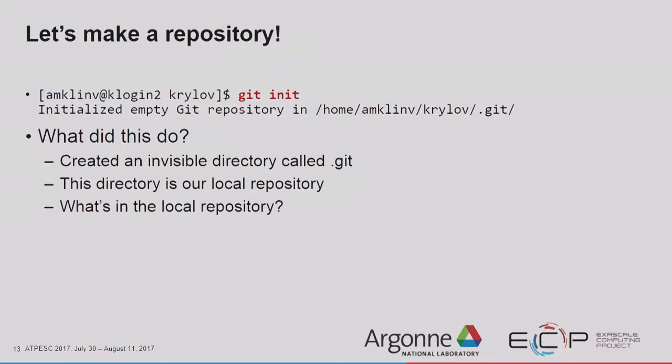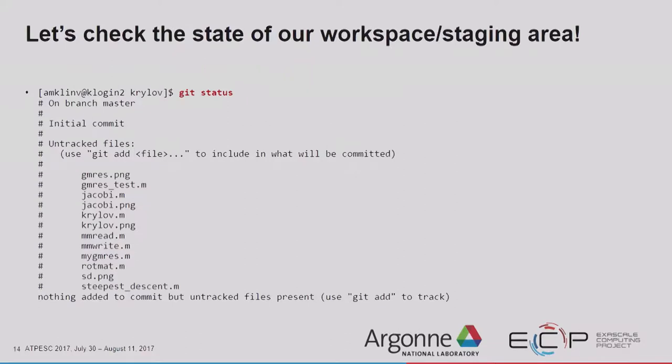Let's look at the state of our workspace and staging area. If we type `git status`, we see that we are on the master branch, on the initial commit — meaning in our photo album there are currently no pictures, nothing in our repository yet. And we have a bunch of untracked files listed. An important thing to know about Git is that it will try to help you: it says right here, you aren't tracking these files, but if you want to add them to your staging area, type `git add`.